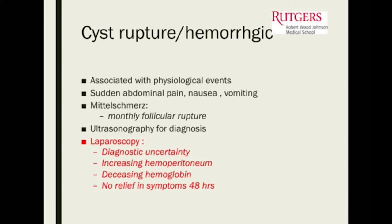We operate if the pain is not getting better over time or if the hemoglobin is dropping. Patients present with similar symptoms — sudden abdominal pain associated with nausea and vomiting. We don't have to operate on all of them, only if there are signs she's continuing to bleed or her symptoms are not getting better within about 48 hours.